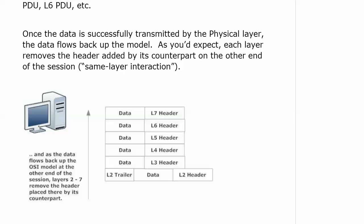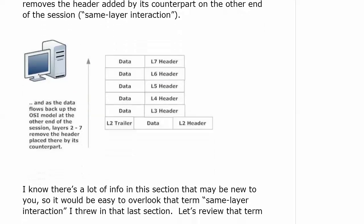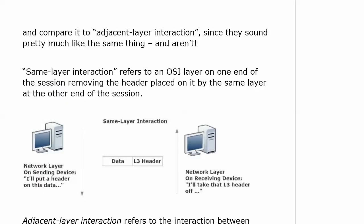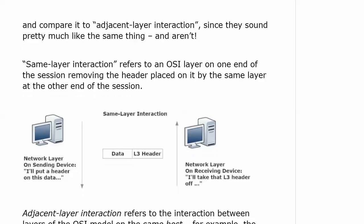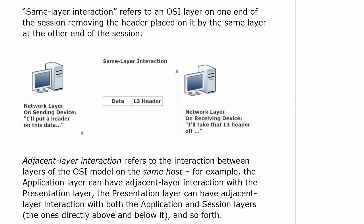There's a lot of information here, so it would be easy to overlook the term same-layer interaction. I want to compare it to adjacent-layer interaction because they sound similar but are not the same. Same-layer interaction refers to an OSI layer on one end of the session removing the header placed by the same layer at the other end. So when the network layer on the sending device puts a header on data and the receiving device takes that layer three header off, that's same-layer interaction.